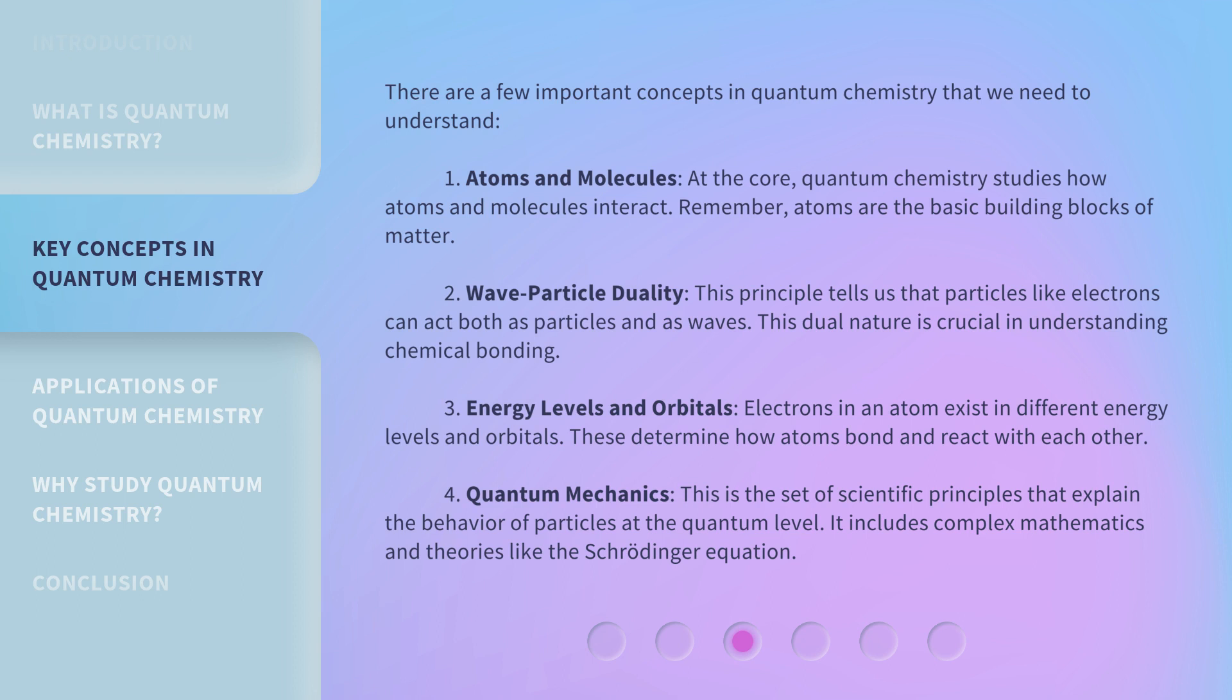Wave-particle duality. This principle tells us that particles like electrons can act both as particles and as waves. This dual nature is crucial in understanding chemical bonding.